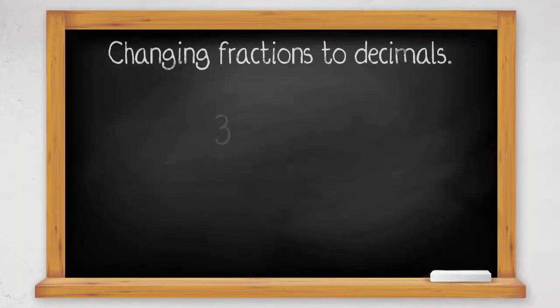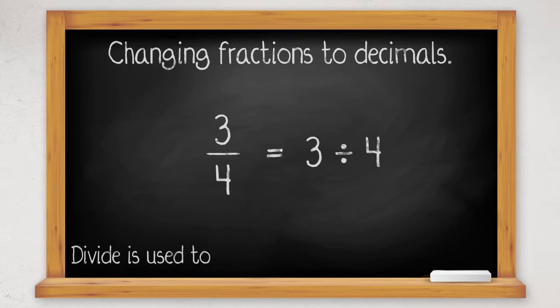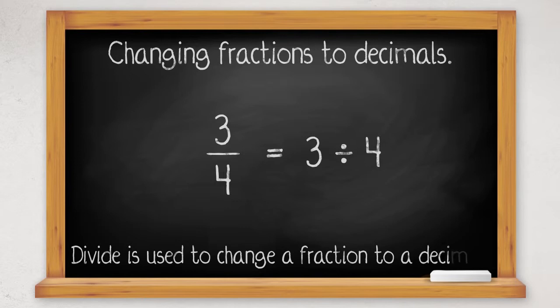When we write a fraction such as 3 quarters, this line means divide, so we can write 3 quarters as 3 divided by 4, and that is the calculation we do to change the fraction to a decimal.